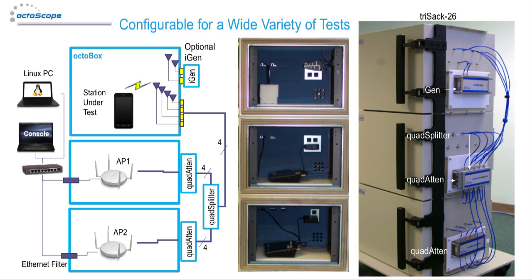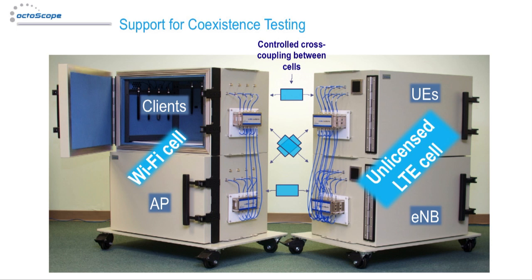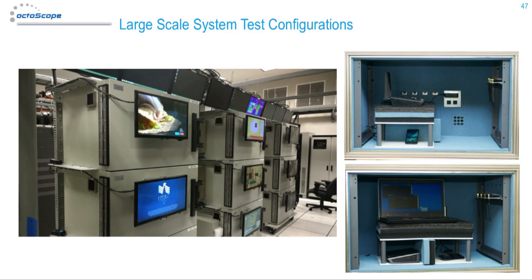Here we see an example of a roaming test configuration, which is a focus of Octoscope's earlier video available on YouTube. You can configure the Octobox for comprehensive coexistence testing that is becoming increasingly important with the emergence of unlicensed LTE. This example shows a testbed configured as two neighboring cells — Wi-Fi and LTE — where you can test how real Wi-Fi and LTE devices interact and use the Octopal and iGen for controlled traffic and interference generation. You can also flexibly set up wireless test networks emulating multiple rooms in a house, with real or emulated devices placed at precise range with respect to one another.